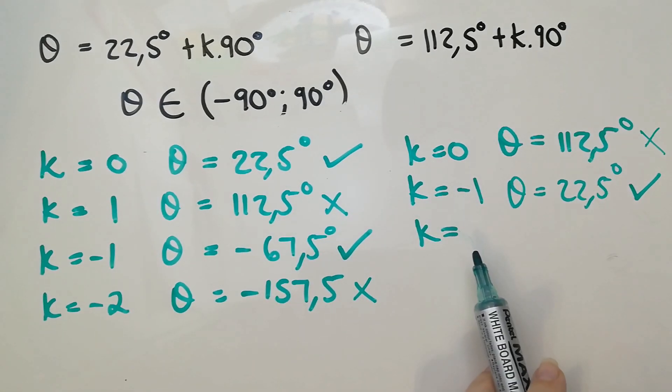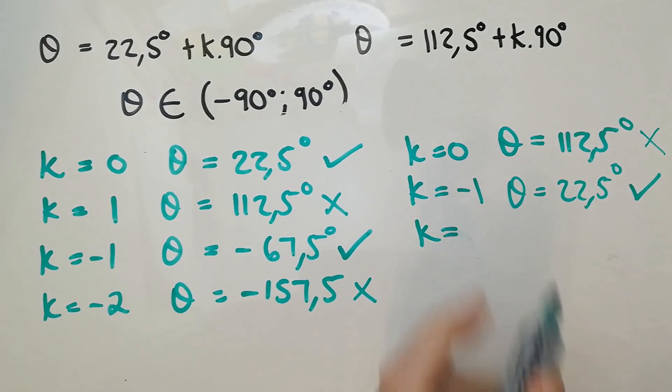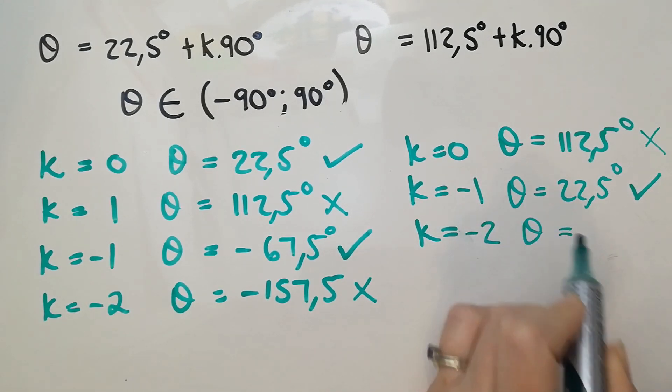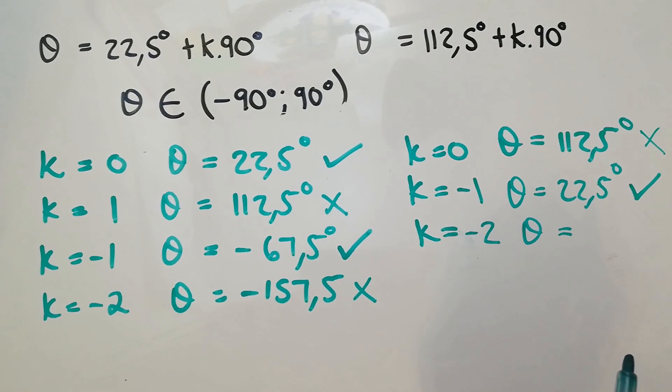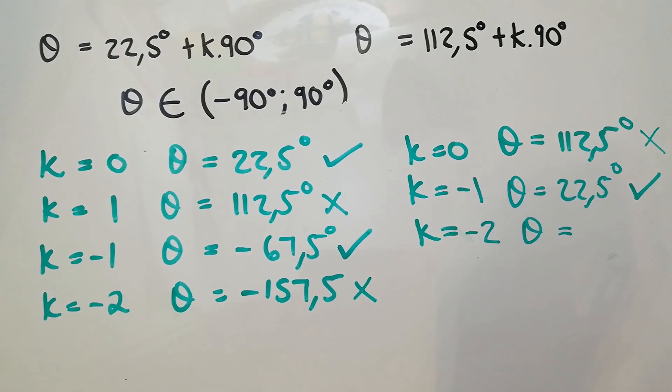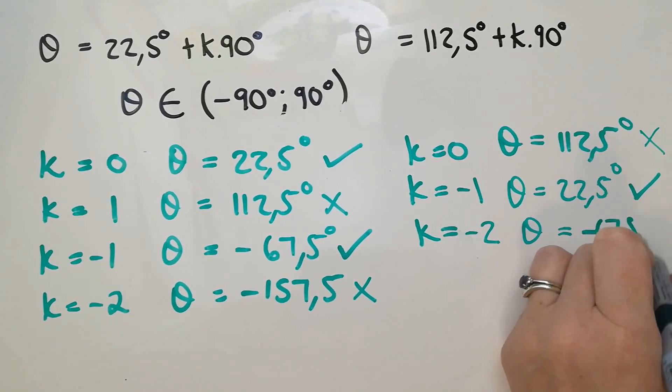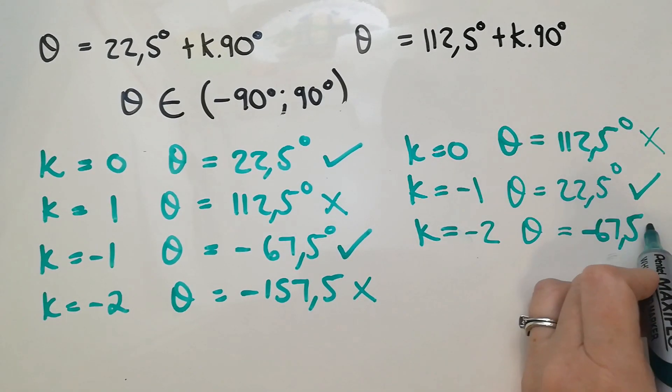What about k being negative two? So if k is negative two, that means I'm going to take the 112.5 plus negative two times 90. I'm doing the same step as I was doing earlier. I'm just talking about it in a different way. That gets me to the negative 67.5. But wait, I already had that.